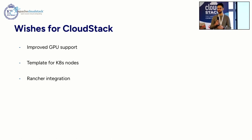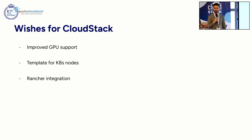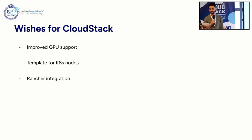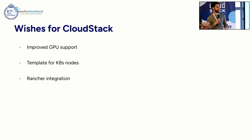Since we are at the CloudStack lab, we have some wishes for CloudStack — sort of a wish list for Santa, but it's CloudStack instead. Obviously GPU support — there are already some talks about it going on. We also noticed that CKS doesn't allow custom templates for nodes building the CKS cluster, so for example if you want to configure the API server of kubectl, this can be tricky without your own template. And we love Rancher, also open source, so we'd love to see it better integrated with CloudStack — so that creating a cluster or adding nodes just works.